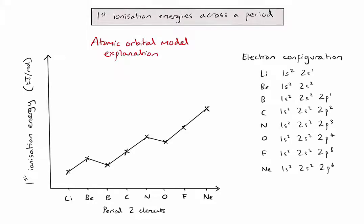Let's start by comparing lithium and beryllium. Highlighting the outer electron in each configuration, we can see that for both lithium and beryllium, the outer electron is in the 2S sub-level. Beryllium has a higher first ionization energy because it has one more proton than lithium, meaning more electrostatic attraction between the nucleus and the outer electrons, making it more difficult to remove. So we see an increase in first ionization energy.